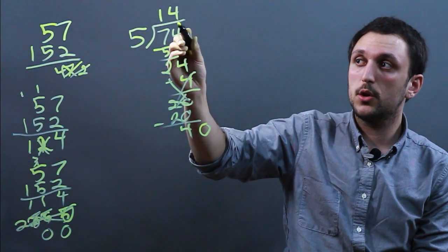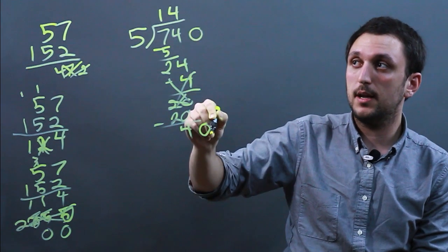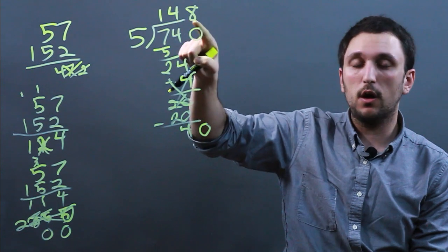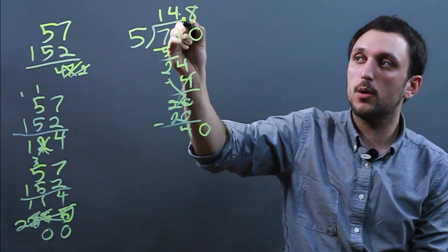However, you could make the error of saying, dropping down to 0, 5 goes into 40 eight times, and saying that the answer is 148. You have to remember the decimal.